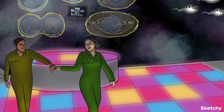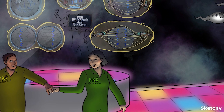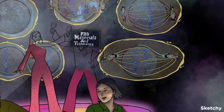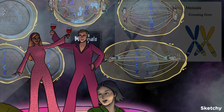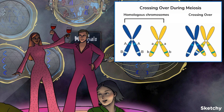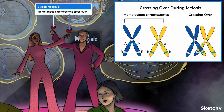Something magical happens next, so pay extra attention. The homologous chromosomes swap chromosomal segments in a process called crossing over. To remember that, here's a duo crossing arms to swap drinks. The point of contact where the chromosomes cross over is called the chiasmata. This recombination event is a random process that results in creation of chromosomes with a unique set of alleles.